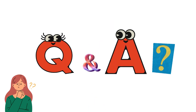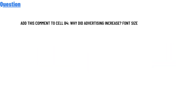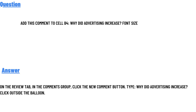So our today's question is: how do you add a comment in a document? The correct answer is: on the Review tab, in the Comments group, click the New Comment button, type your comment, and click outside the balloon. So that is the answer to the question.